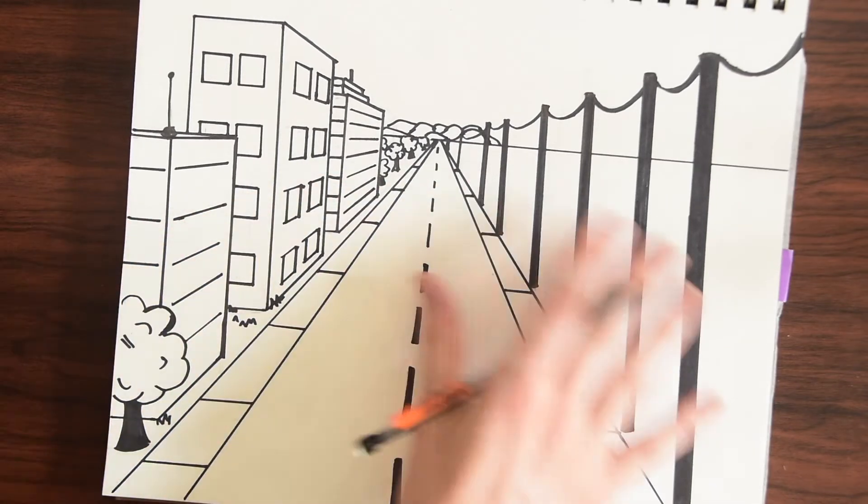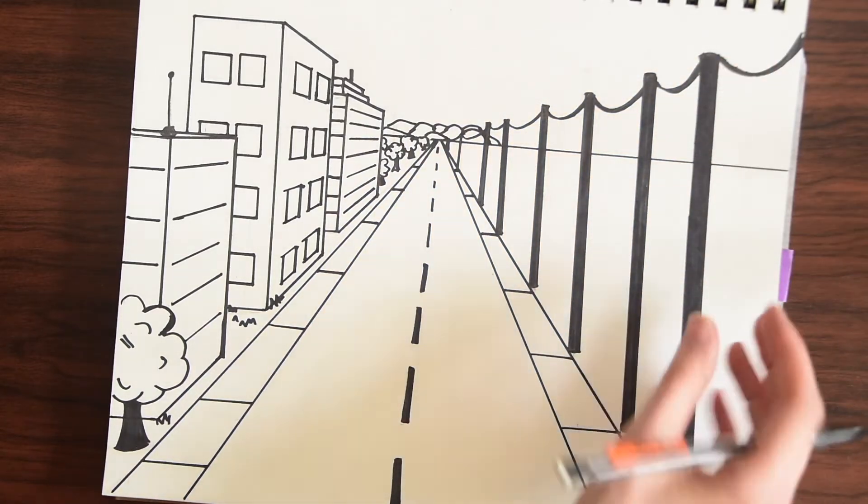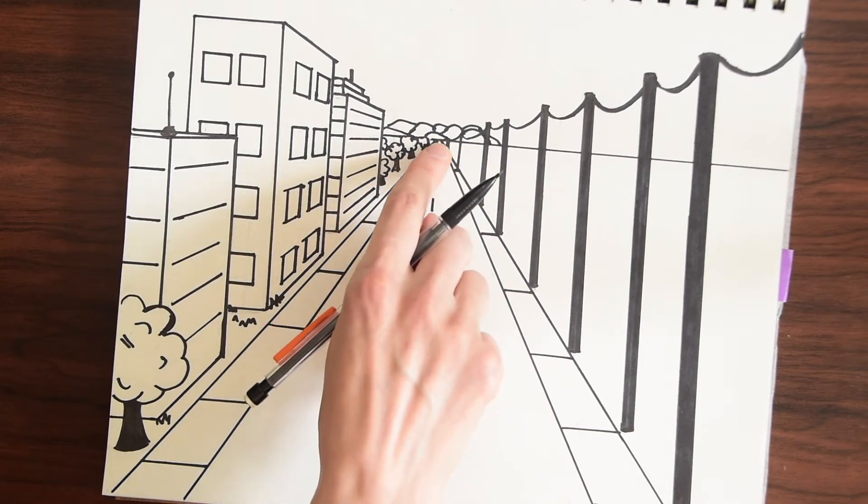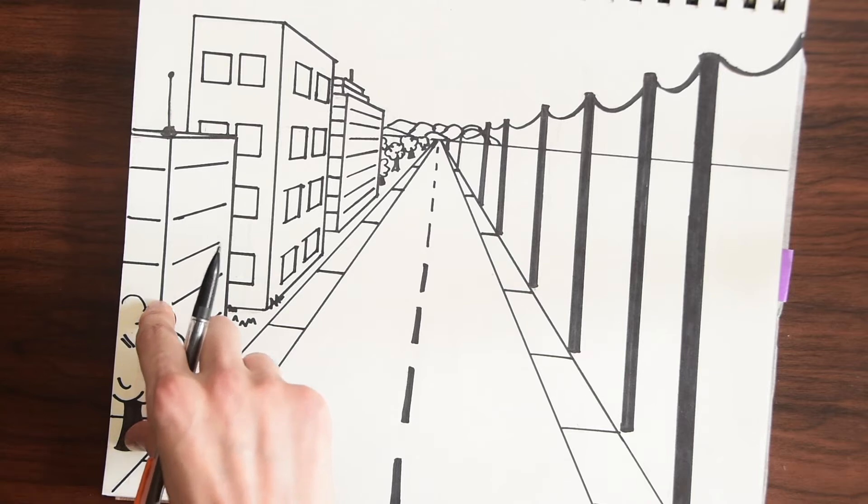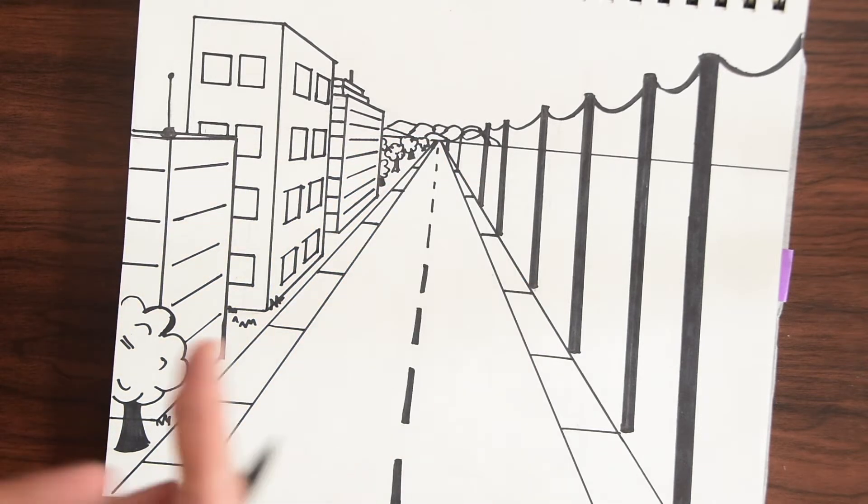You notice this has a cityscape and these power lines and notice these poles are bigger because they're closer to us in this view and when we look further in the distance they get smaller and smaller. And the same goes for these trees. Over here we have a bigger tree and down here we have these smaller trees. It's all about being in proportion and line of sight that we have.